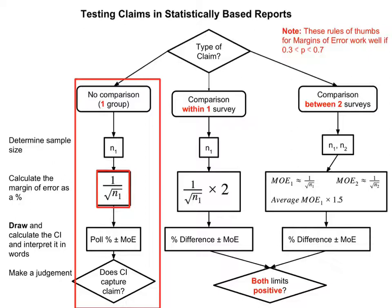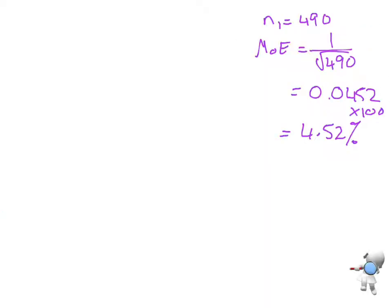Back to the flowchart. The next step is I want to calculate the confidence interval and interpret it. So I've got my formula there, the percentage plus or minus the margin of error. So that's my next step.